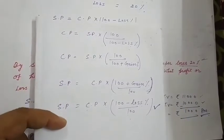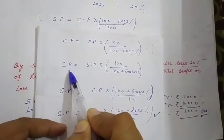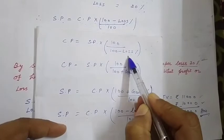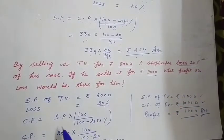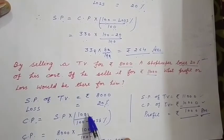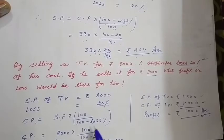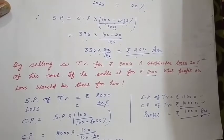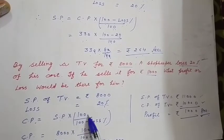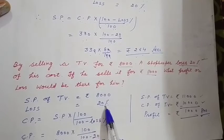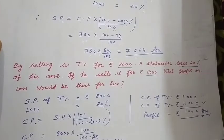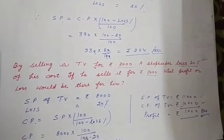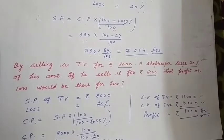Loss दिया हुआ है तो formula apply करेंगे: CP = SP × 100 ÷ (100 − Loss%)। Values fill करते हैं: SP = ₹8,000, loss = 20%, तो 8,000 × 100 ÷ 80।